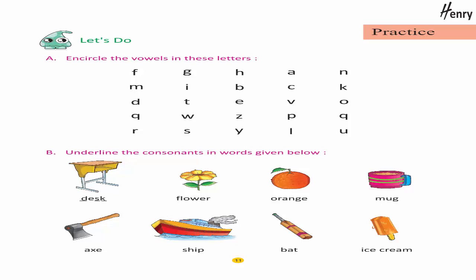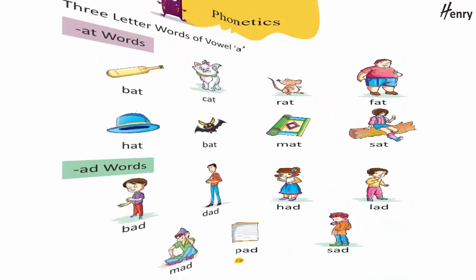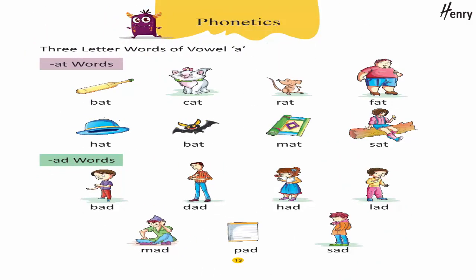Underline the consonants in the words given below. Two-letter words: join the two letters and pronounce them together. Phonetics — three-letter words of vowel A. -AT words: Bat, Cat, Rat, Fat, Hat, Mat.